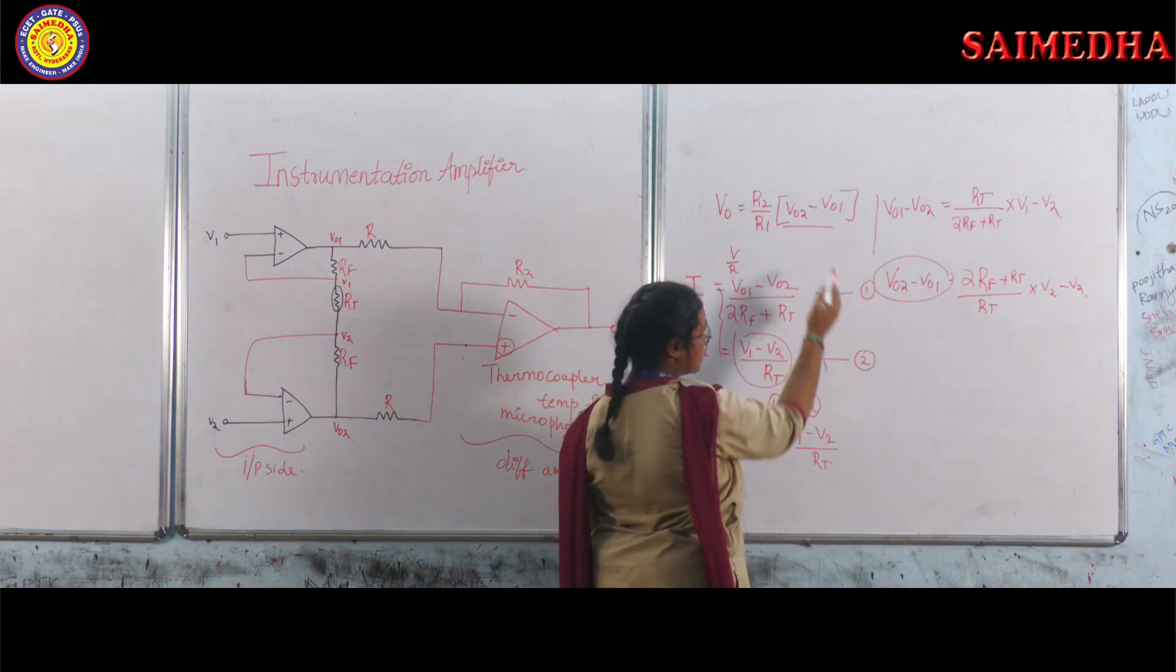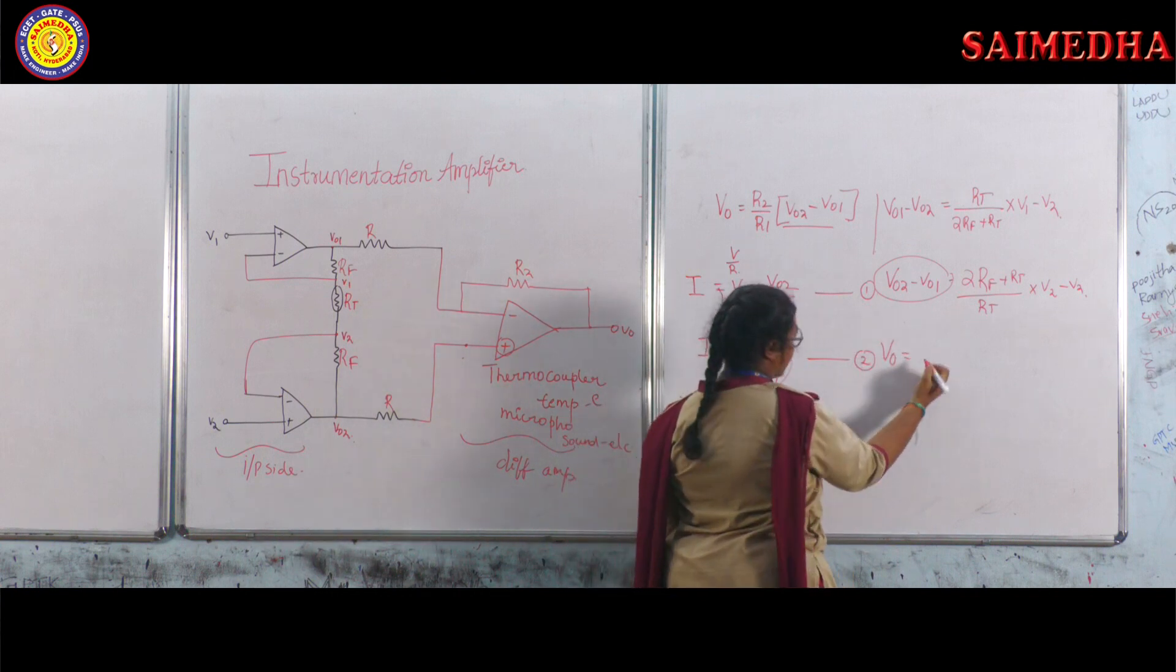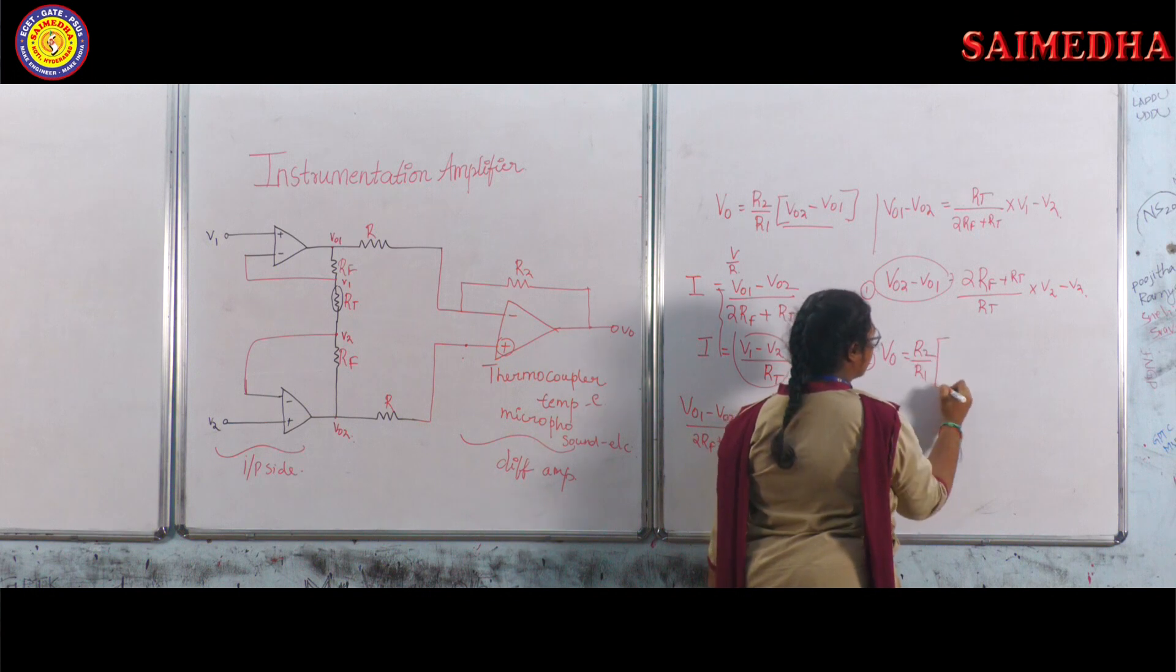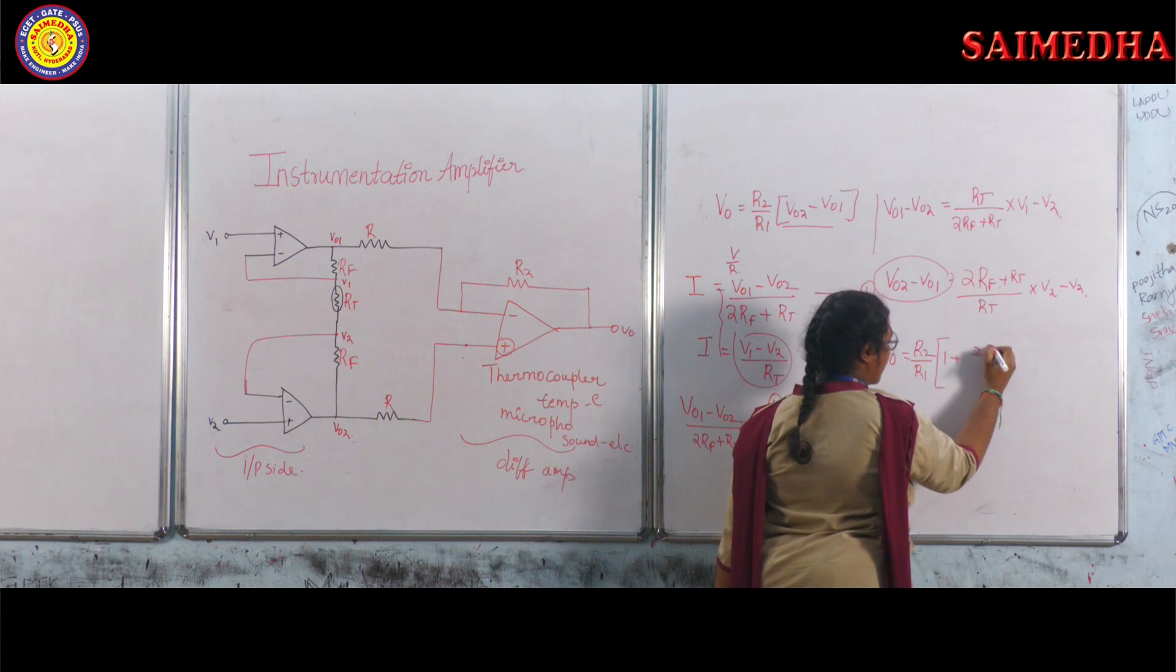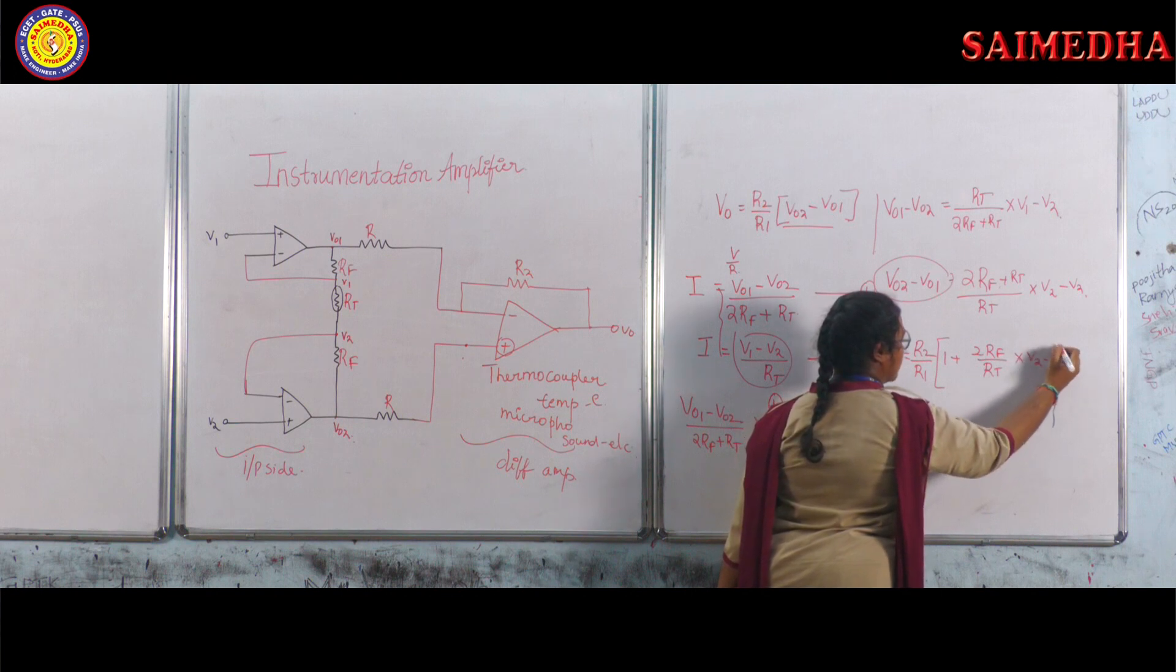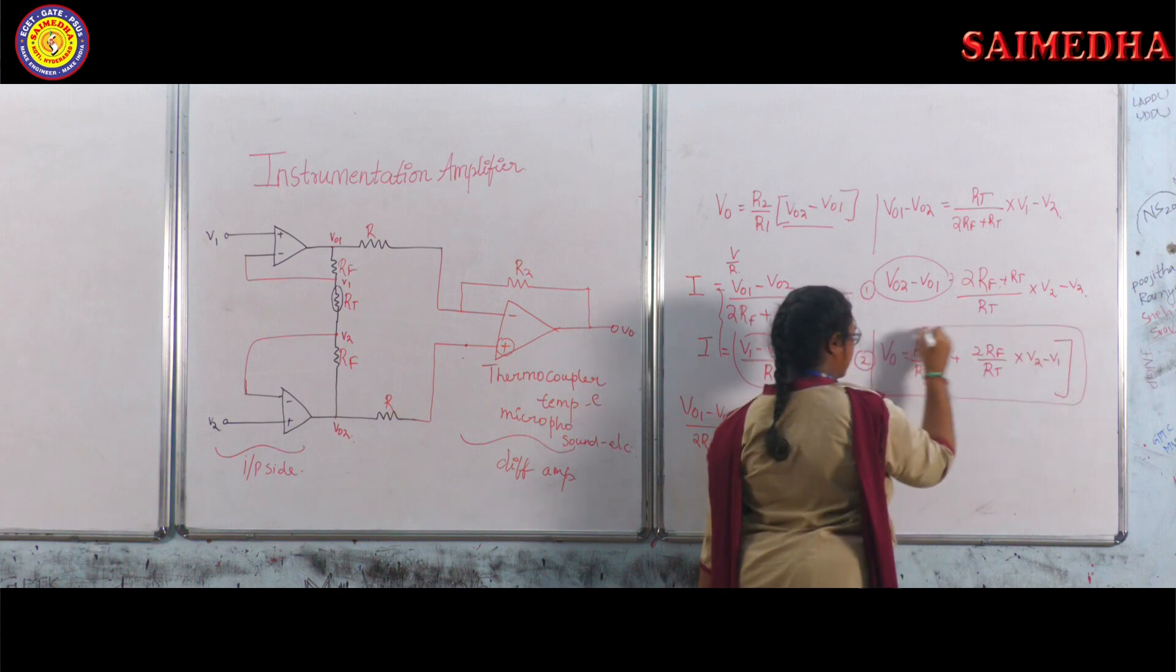Can we substitute this here? So here we will get the output voltage as R2 by R1 into, here we can take it as LCM, so 1 plus 2RF by RT into V2 minus V1. This is the output voltage for this instrumentation amplifier.